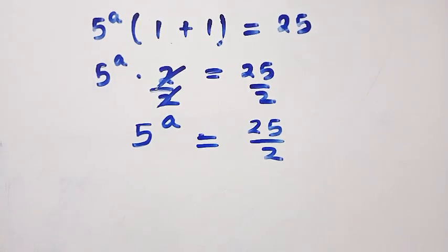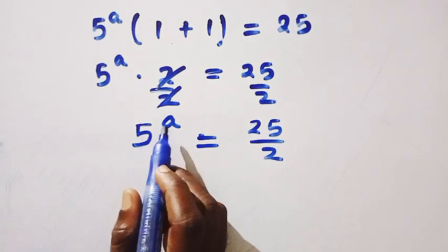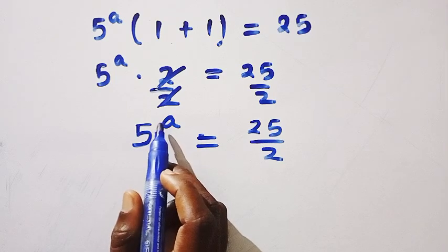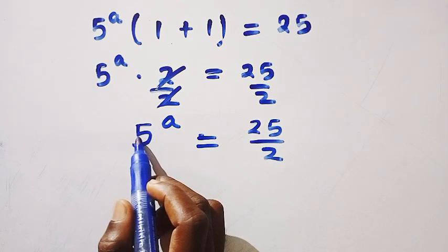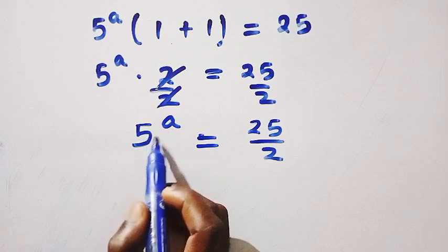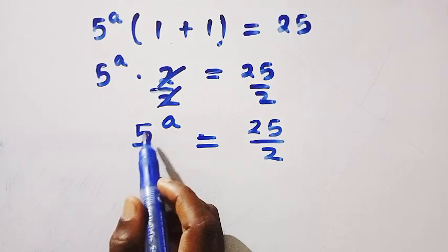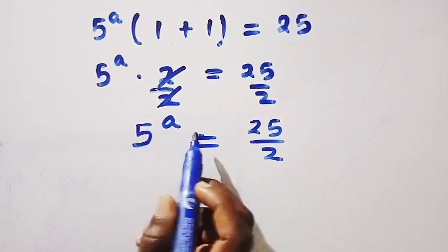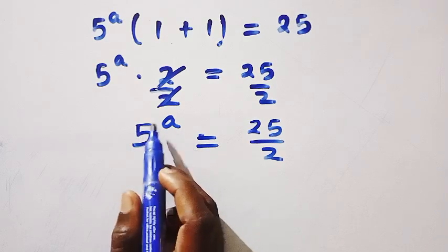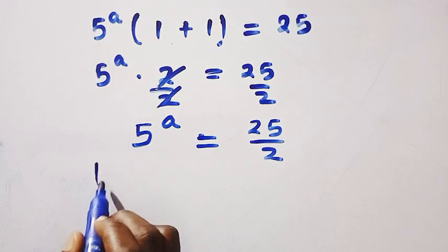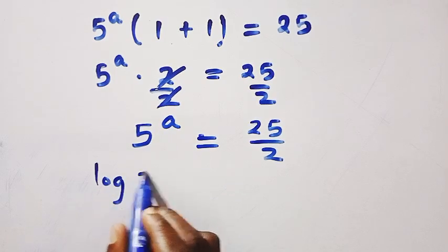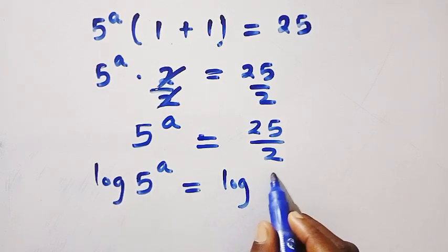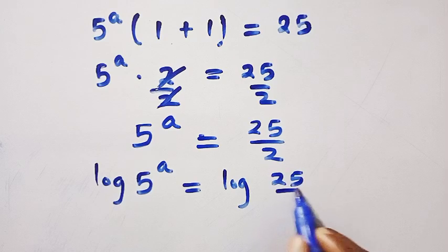At this stage, we are trying to get a. So a is at the exponent — 5 is at the base and a is the power. To get this a, we consider the numerical form, so we can only introduce the logarithm at this point. We introduce log: log 5 power a equals log of 25 over 2.